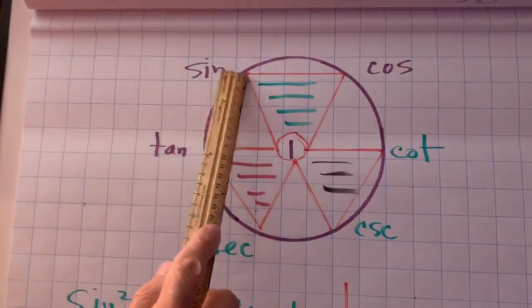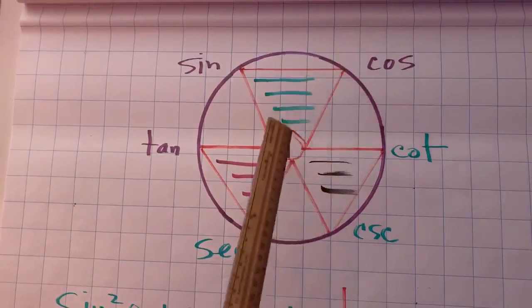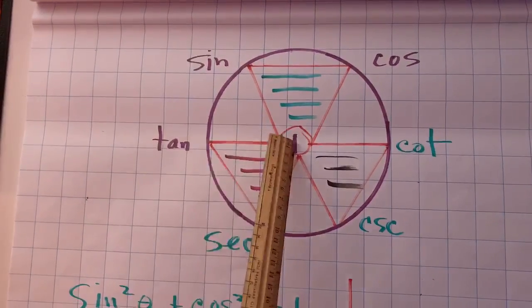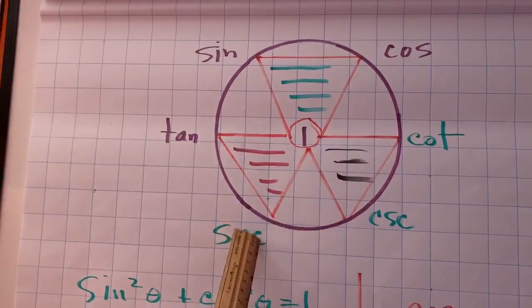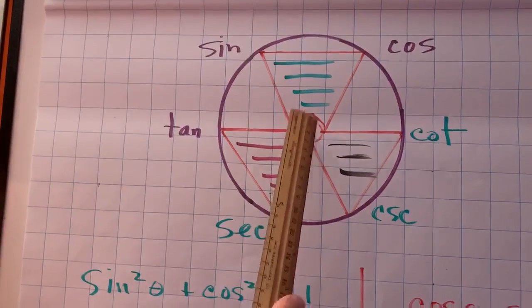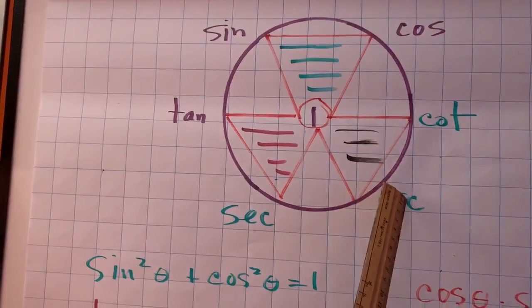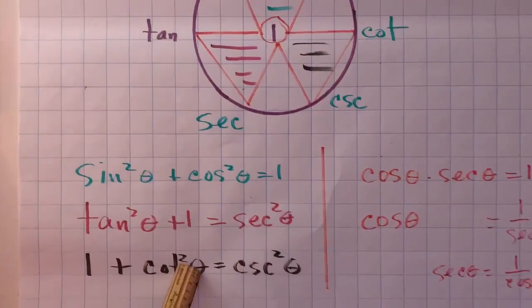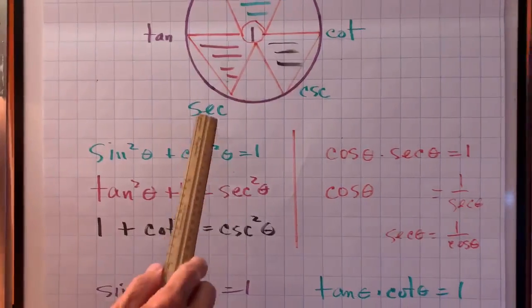So from here, sine squared plus cosine squared equals one. That's great. Tan squared plus one equals secant squared. One plus cotangent squared equals cosecant squared. I have them all written down over here. Let's go back to the picture.